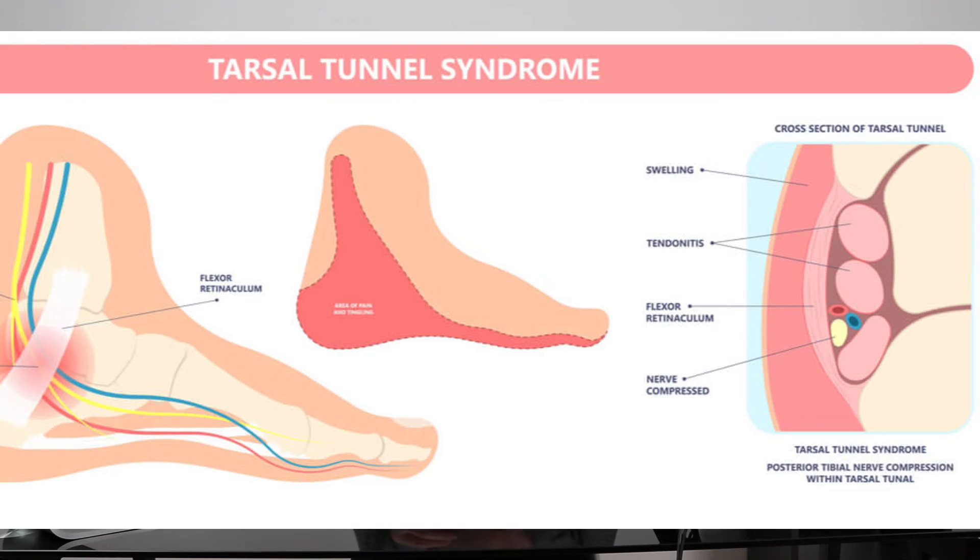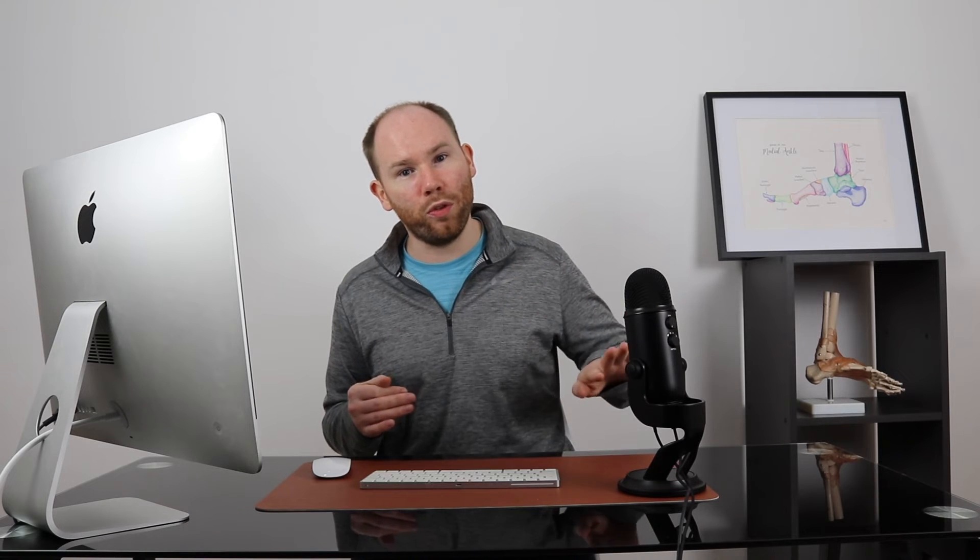The symptoms differentiate from that of a deltoid ligament sprain, or posterior tibial tendon dysfunction, or tendonitis, in that the pain is typically constant, it's there at rest. It can be exacerbated with activity, but normally with a sprain, or with a tendon issue, the pain improves at rest, and most of the time it's pain-free.